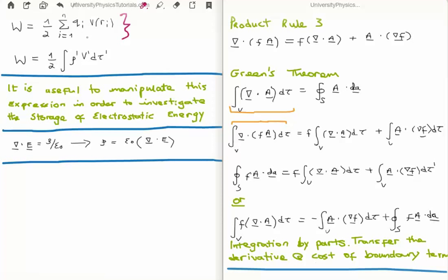Of course if we're talking about a continuous distribution of charge, the sum goes from a sum to an integral. Now it's useful to manipulate this expression in order for us to investigate the storage of electrostatic energy. Because as it stands it seems that the electrostatic energy is being stored in the charge. And we'll see in a moment that in actual fact another way of looking at it is that the energy is being stored in the field.